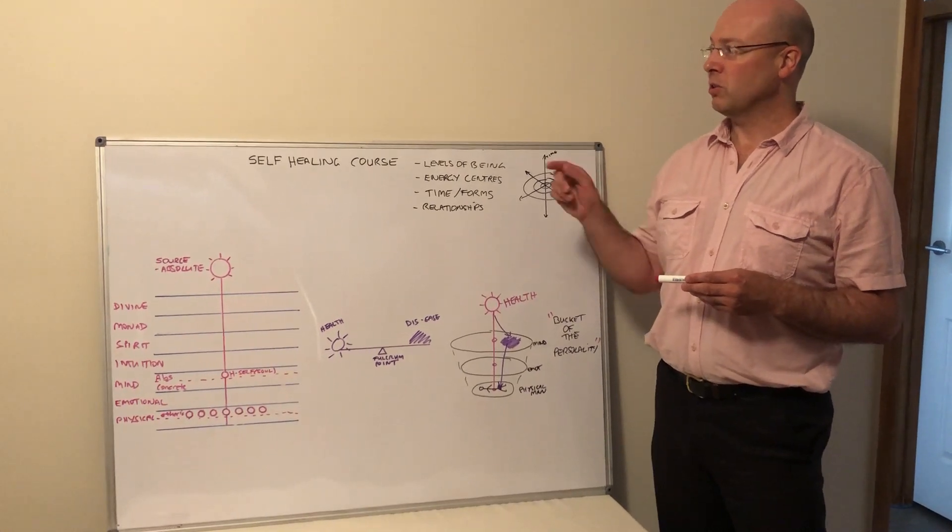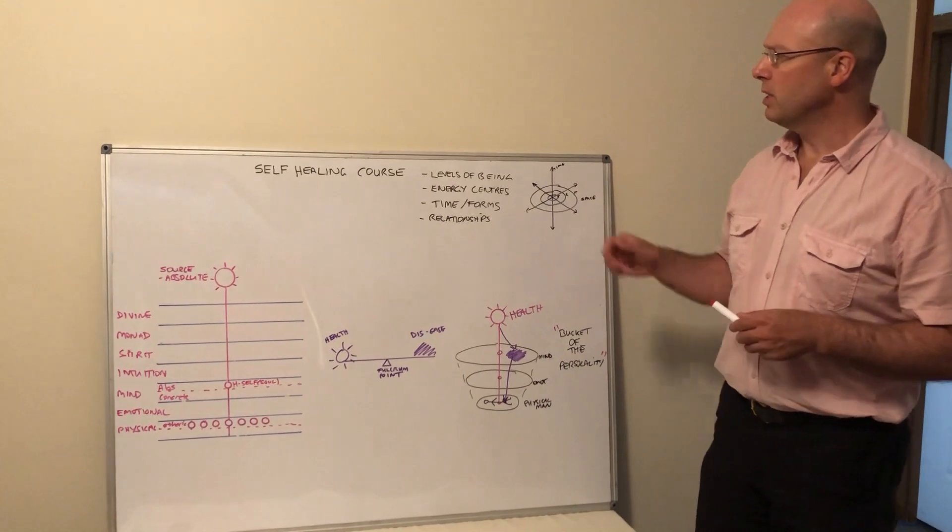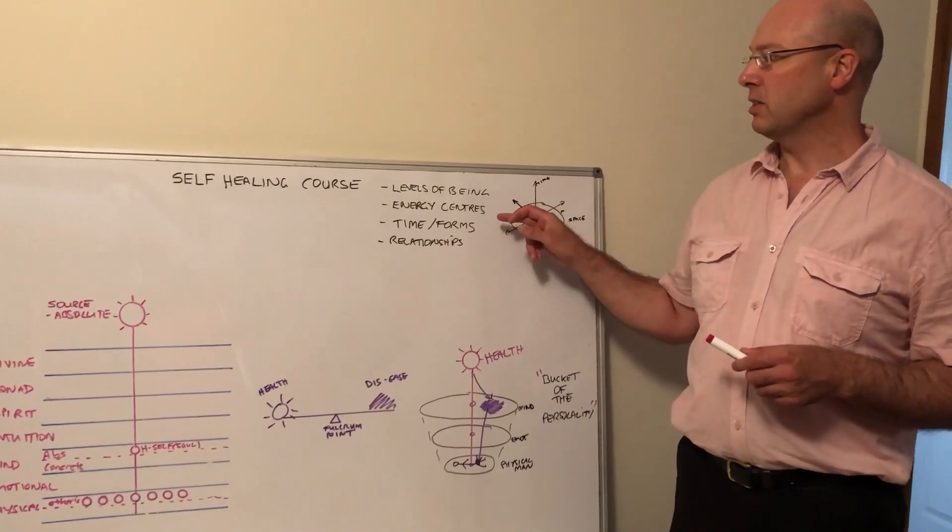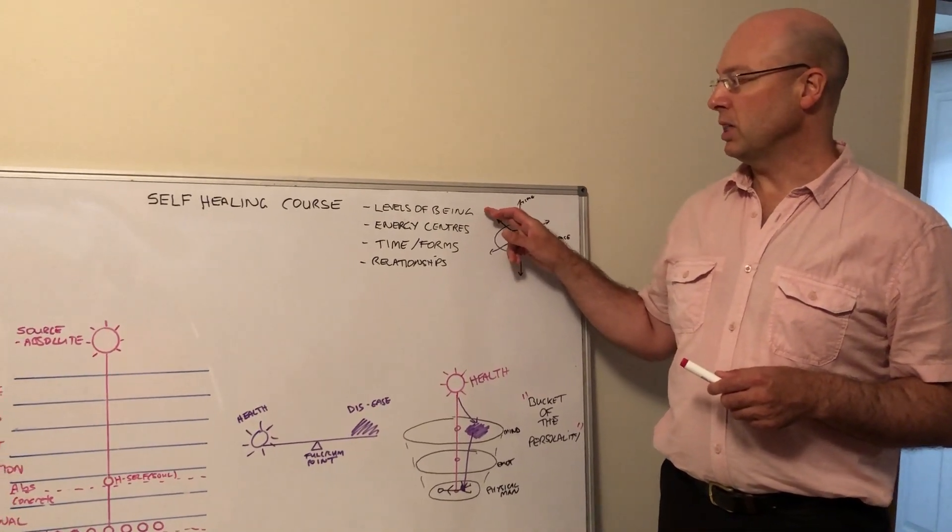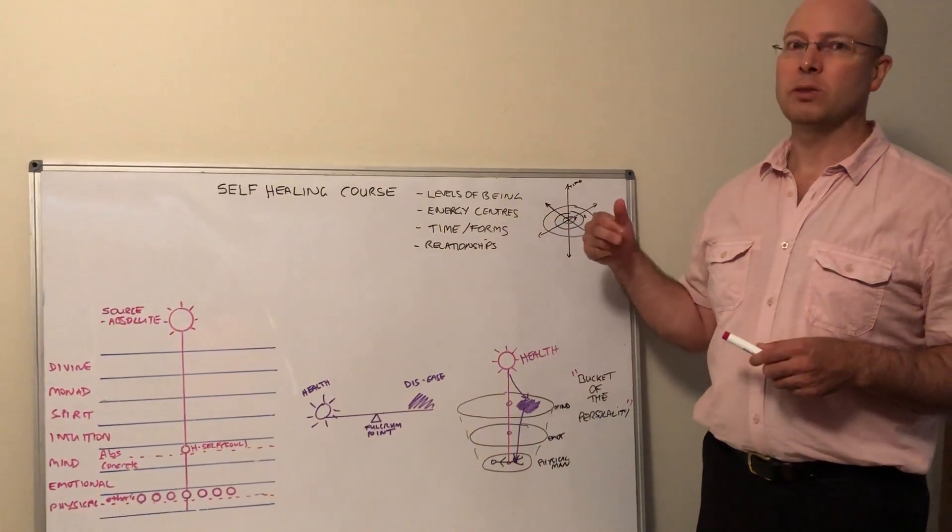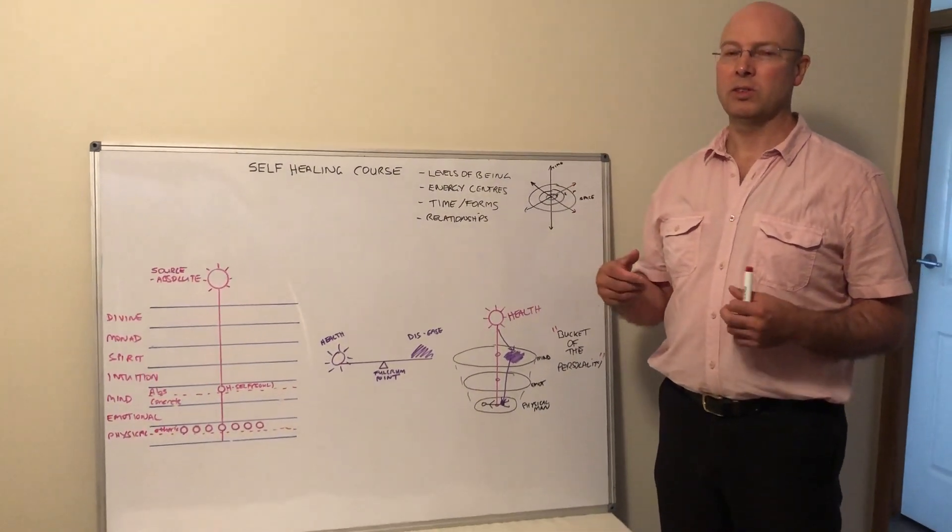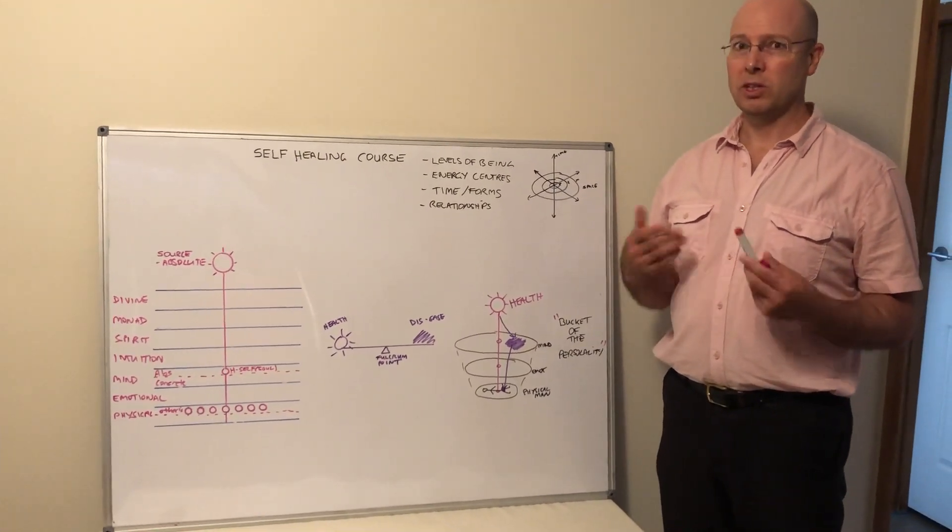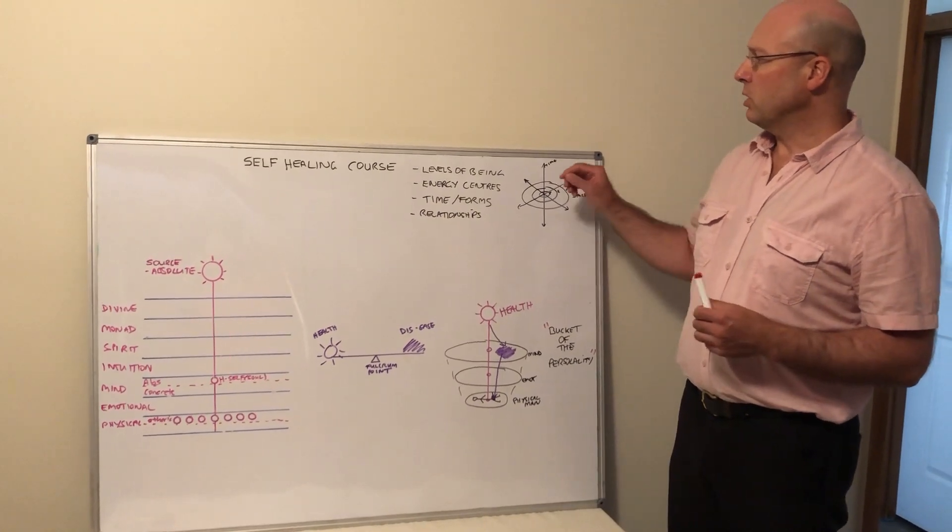So I've decided to create a self-healing course divided into different modules. These are some of the topics: levels of being, energy centers, time forms, and relationships. These are important because if you're going to do meditation, you need to understand these topics to make the most of it and to understand what it is you're trying to do to self-heal.